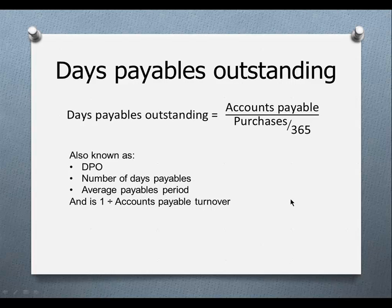In a similar manner, we calculate the days payable outstanding, comparing the accounts payable balance from the balance sheet with the average purchases per day. You won't find purchases on a financial statement, but you can infer them from the basic accounting relationship: beginning inventory plus purchases equals cost of goods sold plus ending inventory. Given three of those pieces, you can back into purchases from a balance sheet and income statement. Days payable outstanding is also referred to as the average payable period or the number of days payables, and it is the inverse of accounts payable turnover.